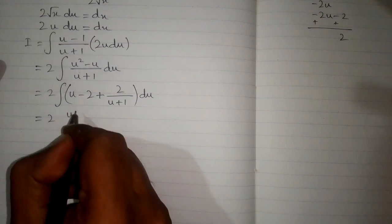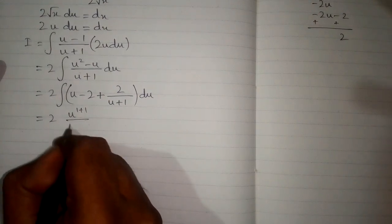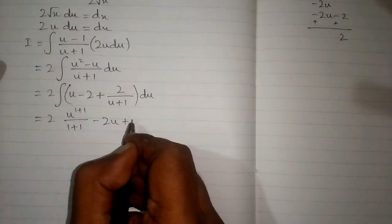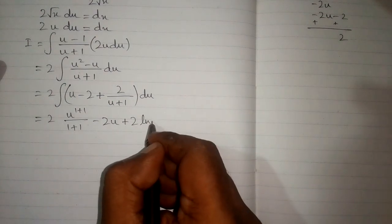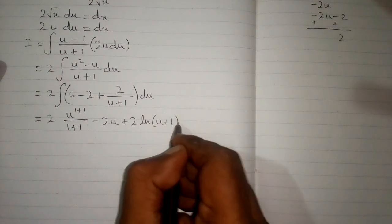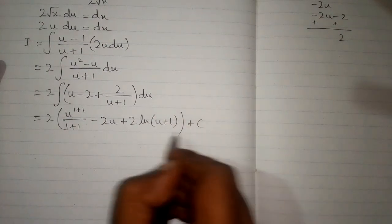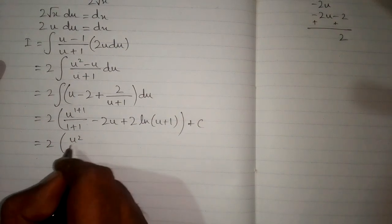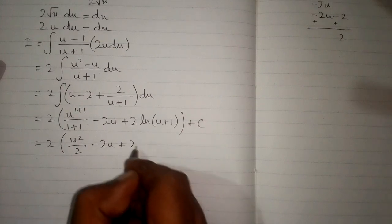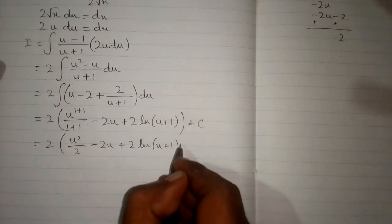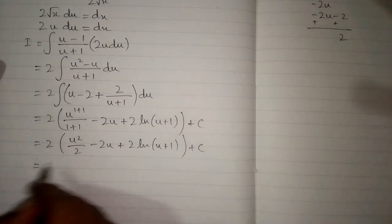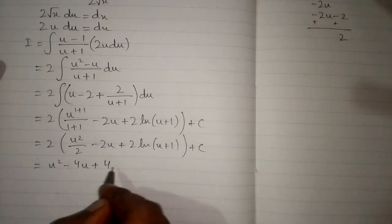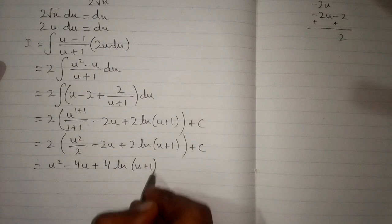The integral of u is u raised to the power 2 upon 2. The integral of 2 is 2u, and the integral of 2 upon u plus 1 is 2 times ln of u plus 1, plus c, where c is the constant of integration. We have u squared upon 2 minus 2u plus 2 times ln of u plus 1, and then multiplying the expression by 2, we get u squared minus 4u plus 4 times ln of u plus 1, plus c.